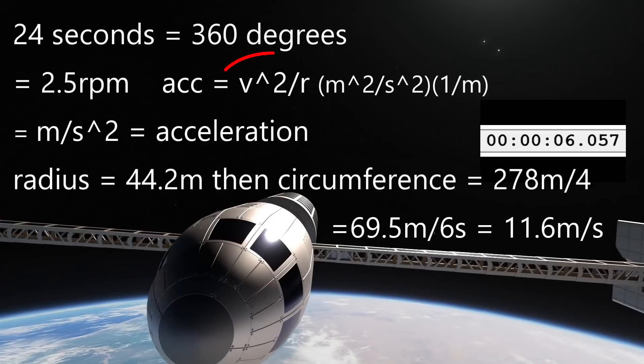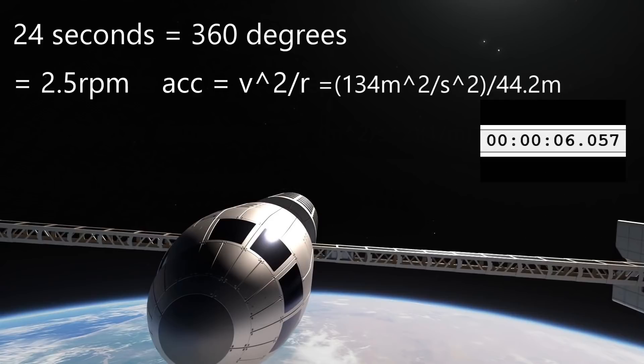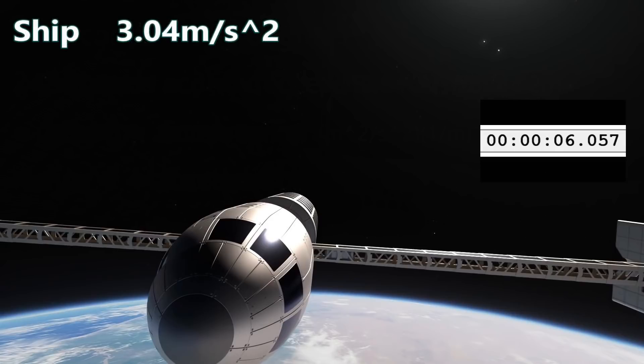We square the velocity and divide by the radius. Squaring the velocity gives us 134 meters squared per second squared. And dividing by the radius gives us a little less than 3.04 meters per second squared.